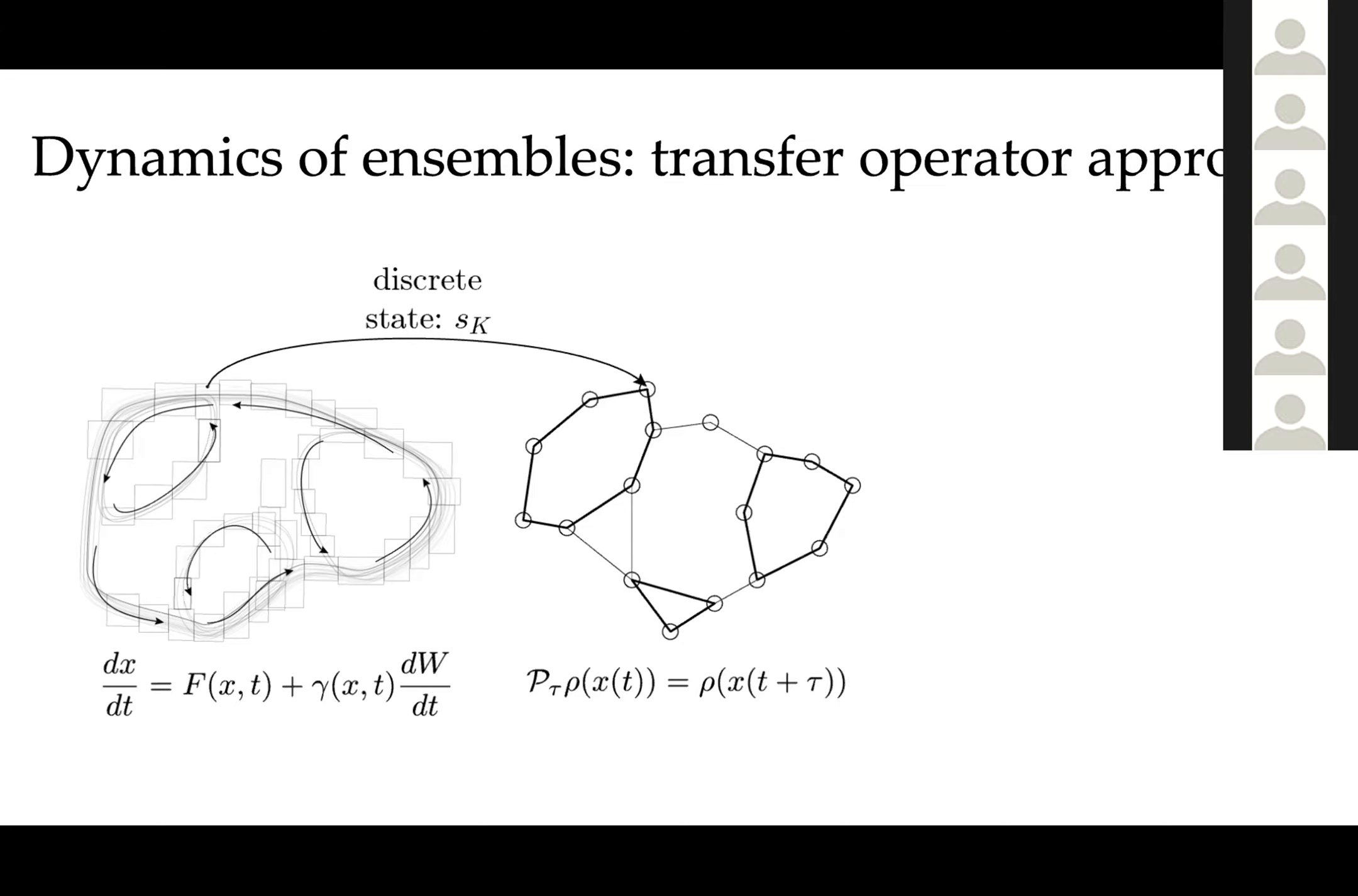Because this operator acts on densities, if you approximate it, it's going to be a finite Markov chain. We know from Markov chain theory that the eigenvalues will be bounded by above by the eigenvalue one, which corresponds to the invariant density of the system. The remaining eigenfunctions are going to decay to this invariant density on different timescales that are proportional to the log of the eigenvalue.